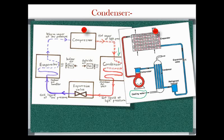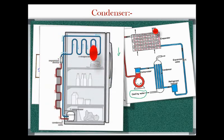At the outlet of the condenser, we get high pressurized liquid at low temperature. As seen in the diagram, the compressor is situated at the bottom of the refrigerator. The output of the compressor contains high pressure, high temperature refrigerant, which then flows through the condenser coil where it gets condensed. At the output of the condenser, we get high pressure, low temperature liquid refrigerant.